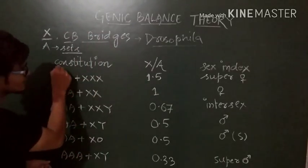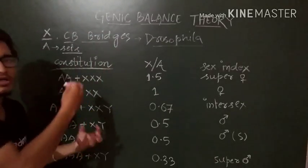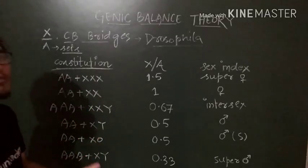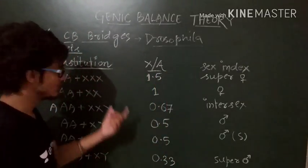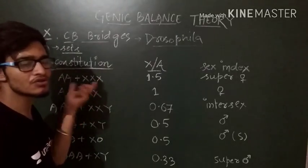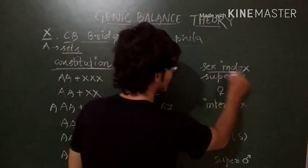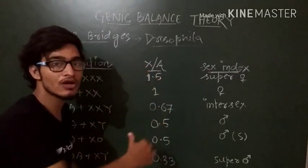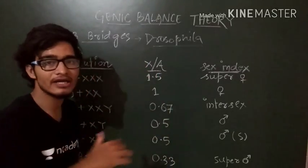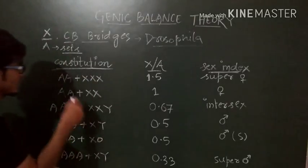So the very first constitution, it means that the chromosomal constitution, what is the chromosome made up of. Then X by A ratio, we are going to take the ratio from this particular constitution. After that, we are making sex index, that what is that particular individual called on the basis of X by A ratio.